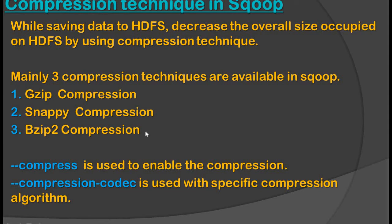In Sqoop, mainly these three compression techniques are available. We will see how Sqoop uses these three compression techniques one by one. Double hyphen compressed is used to enable the compression, and double hyphen compression hyphen codec is used with a specific compression algorithm. We will see these things with examples in a few minutes.